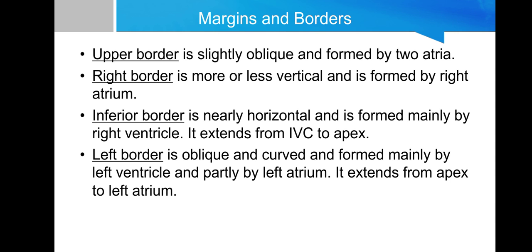Now we come to the margins and borders of the heart. The upper border is slightly oblique and formed by the two atria, and also by the pulmonary trunk and arch of aorta. The right border is more or less vertical and is mostly formed by the right atrium, along with the superior and inferior vena cava entering the right atrium. The inferior border is nearly horizontal, mainly formed by the right ventricle, extending from the inferior vena cava to the apex, and also containing a little part of the left ventricle. The left border is oblique and curved, formed mainly by the left ventricle, with part of the left atrium also contributing — it extends from the apex to the left atrium.